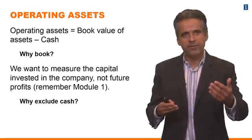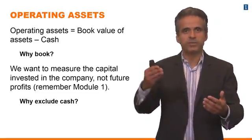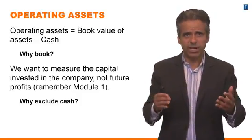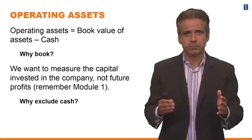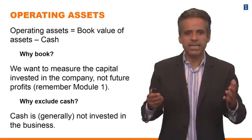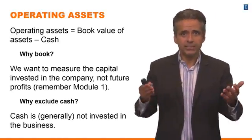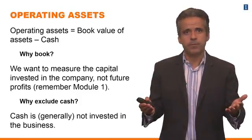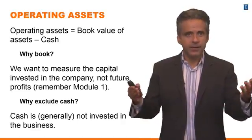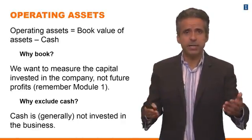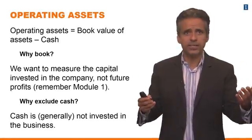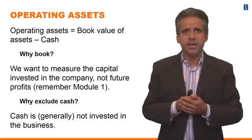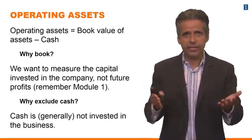If you are using market values, you are really comparing current profits to future profits — we do that when we compute valuation ratios, not when we are trying to measure performance. Why are we excluding cash? We are excluding cash because cash is clearly not invested in the business in most cases. Cash is typically invested in treasury bonds or bank deposits — it's not money that is directly invested in the business. So when computing EVA, it's good practice to remove cash and short-term investments.